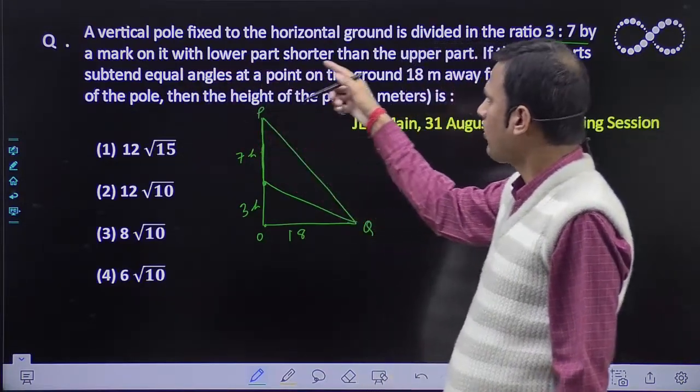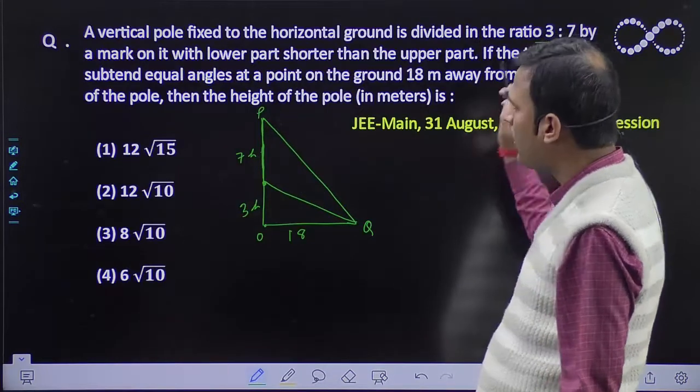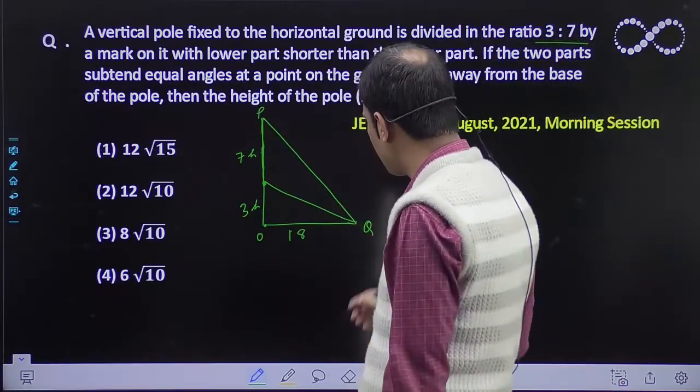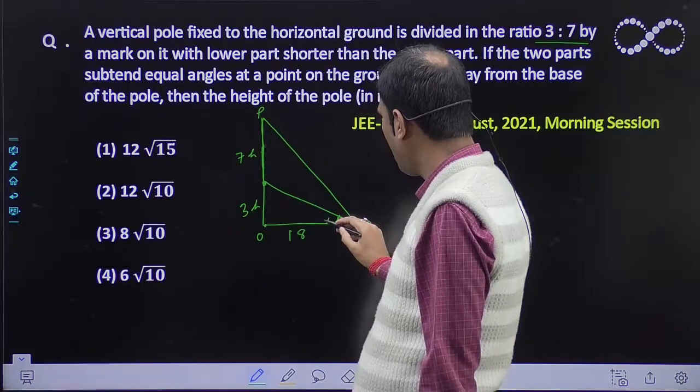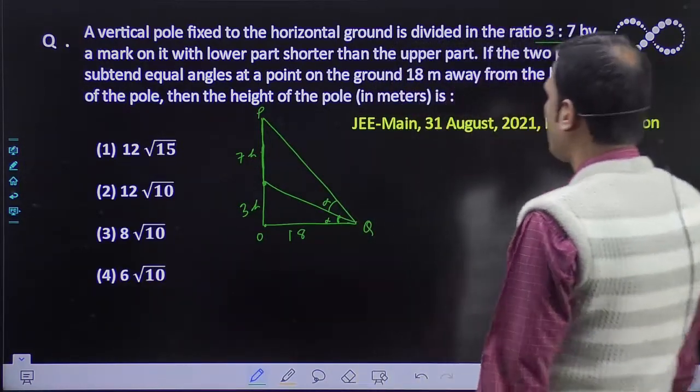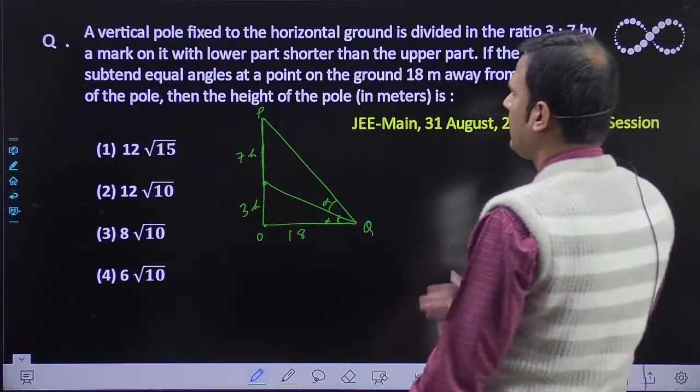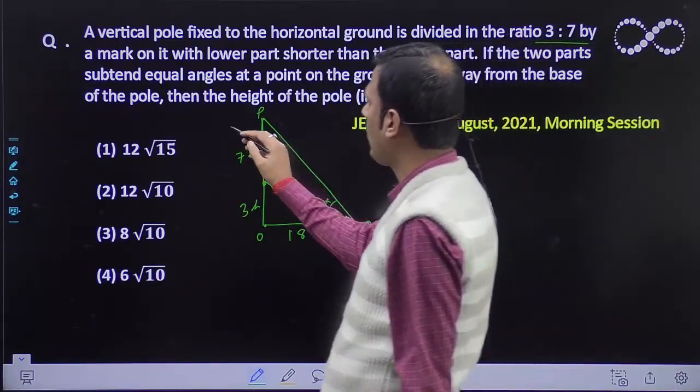A mark with lower part shorter than the upper part. So this is 3h and this is 7h. If the two parts sustain equal angles, what are both parts doing? They're making equal angles. This is also alpha and this is also alpha. On the ground 18 meters, this 18 meters is given from the base of the pole. Then find the height of the pole.